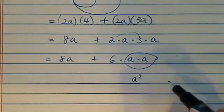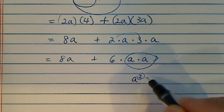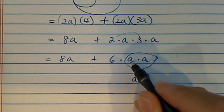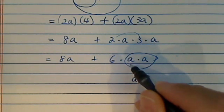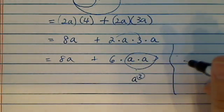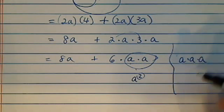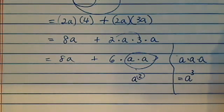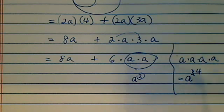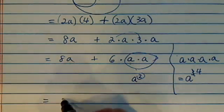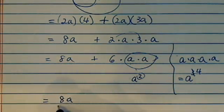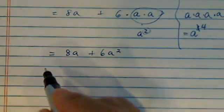A times a—there's a quicker way we write it in mathematics. We call it a squared. When we put a hat on a, we're basically saying let's just duplicate a twice by multiplication. By that idea, a times a times a equals a to the cube. If I have times a again, that'd be a to the fourth, and so on. That's just a shortcut to write it. So let's clean it up a little bit: 8a plus 6a squared.